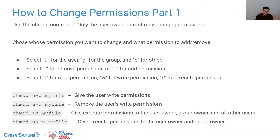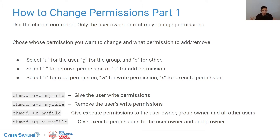Someone asked whether root can be stripped of permissions. Root can remove their own write permissions on a file and will then not be able to edit it, but root can still add those permissions back. So root can lock themselves out temporarily but not permanently. Also mentioned is chattr +i, which makes a file immutable so no one can modify it, and chattr -i to make it mutable again.